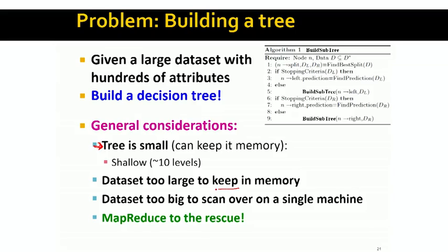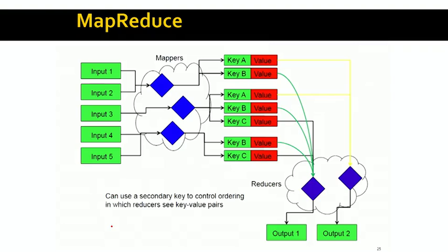The data set is too large to keep in memory, and the data set is too big to scan over it on a single machine. So we really want to have this data set be distributed across a large number of machines, and the idea is that because the data set needs to be distributed, we'll be using the MapReduce framework.